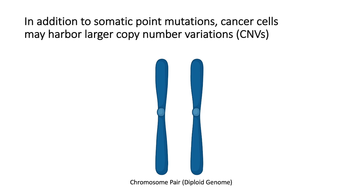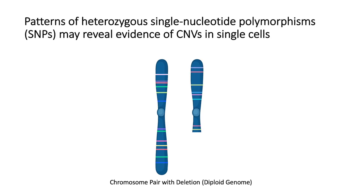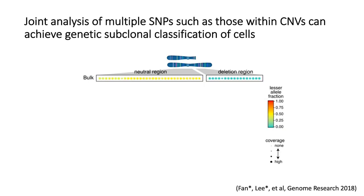In addition to somatic point mutations, cancer cells may harbor genomically larger aberrations, such as copy number variations, or CNVs. In CNVs, chromosomal regions, arms, or even whole chromosomes may be lost or gained. We reason that patterns of heterozygous single nucleotide polymorphisms, or SNPs, present throughout the genome may be used to reveal evidence of such copy number variations in individual cells that could be used to distinguish different genetic subclones. Specifically, even though individual SNPs may be impacted by sparse coverage and high monoallelic detection, joint analysis of multiple SNPs within regions affected by CNVs could allow us to confidently achieve subclonal classification.